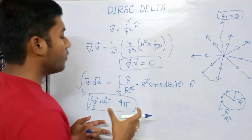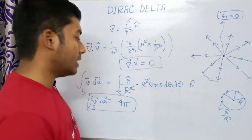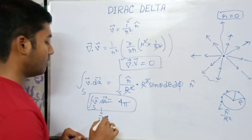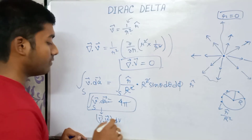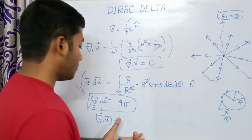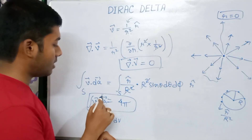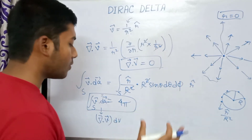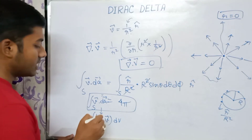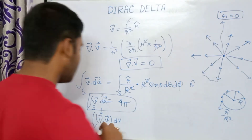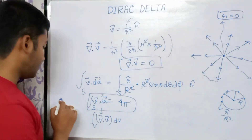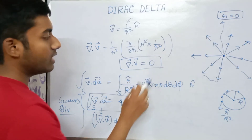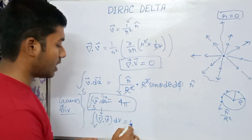The Gauss divergence theorem tells us that the surface integral ∮v·da equals the volume integral ∫(del·v)dV over that sphere. But we calculated that del·v = 0, so the volume integral comes out to be zero — contradicting our surface integral result of 4π.